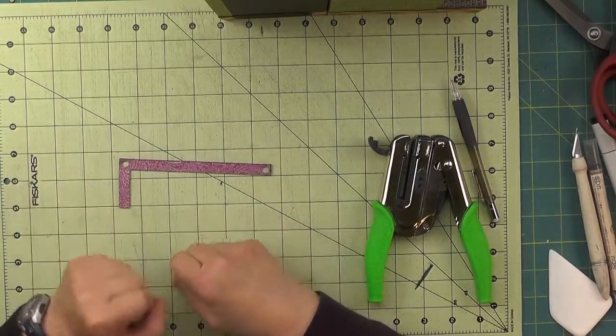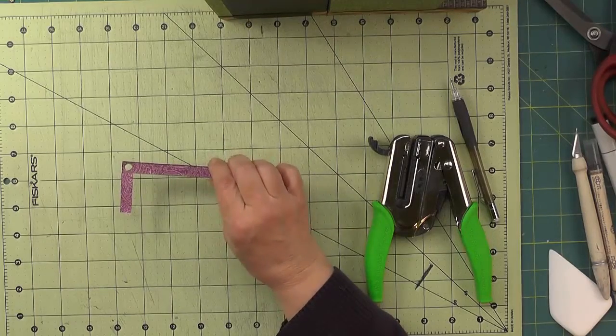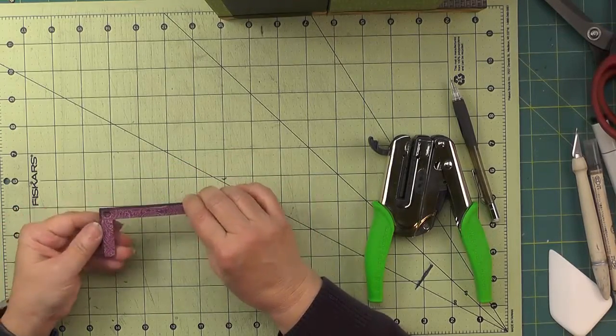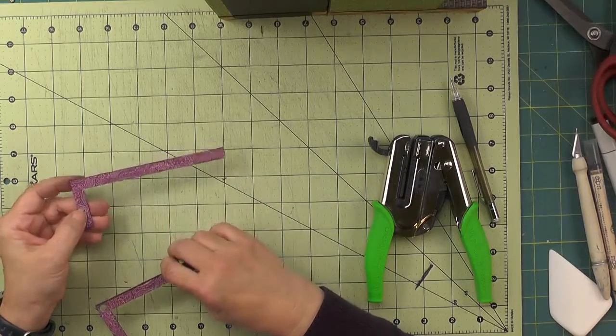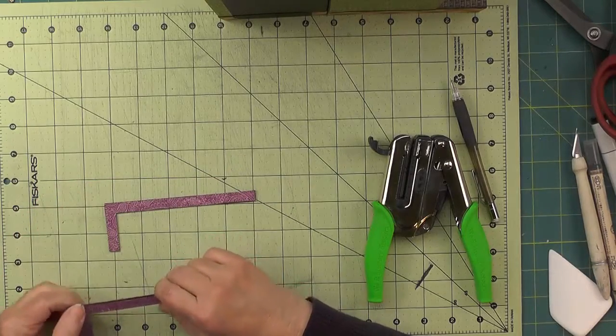Once you have those two holes done, you'll want to use this as a template for all of your other three pieces - the one that has paper on it and the other two that do not.